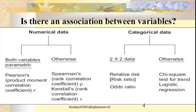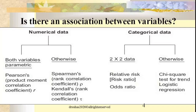Suppose the data are categorical or nominal. If you have a 2×2 dataset — very commonly in case-control studies — you use the odds ratio. If you are doing a cohort study, you use the relative risk. And if you want to see an association for nominal data, then you can go for the chi-square test for trend or logistic regression. These are the commonly used statistical tests for non-interventional studies when the question is whether there is any relationship or association between variables.